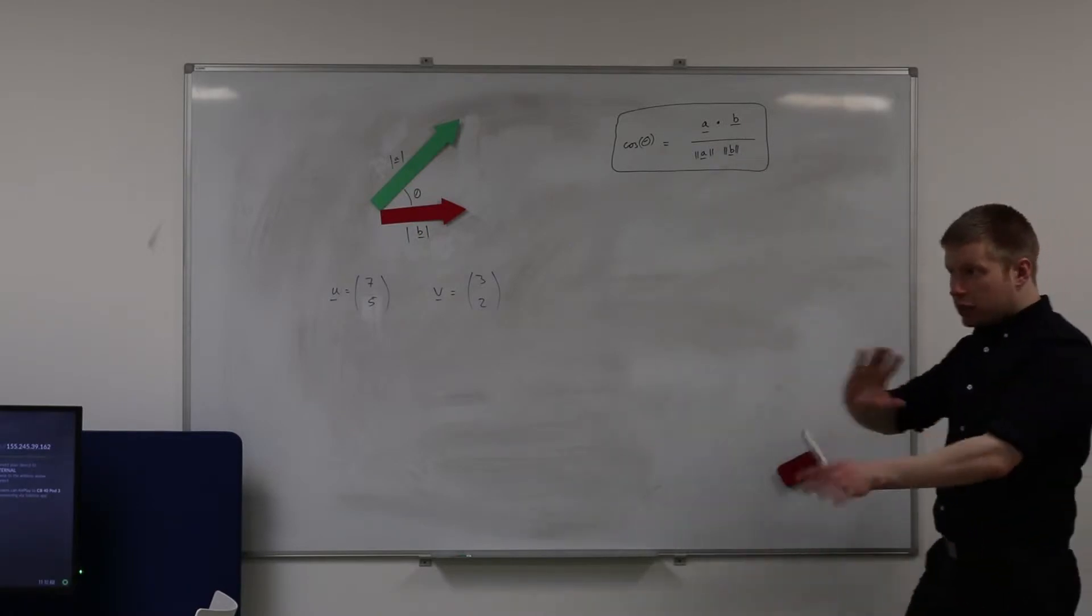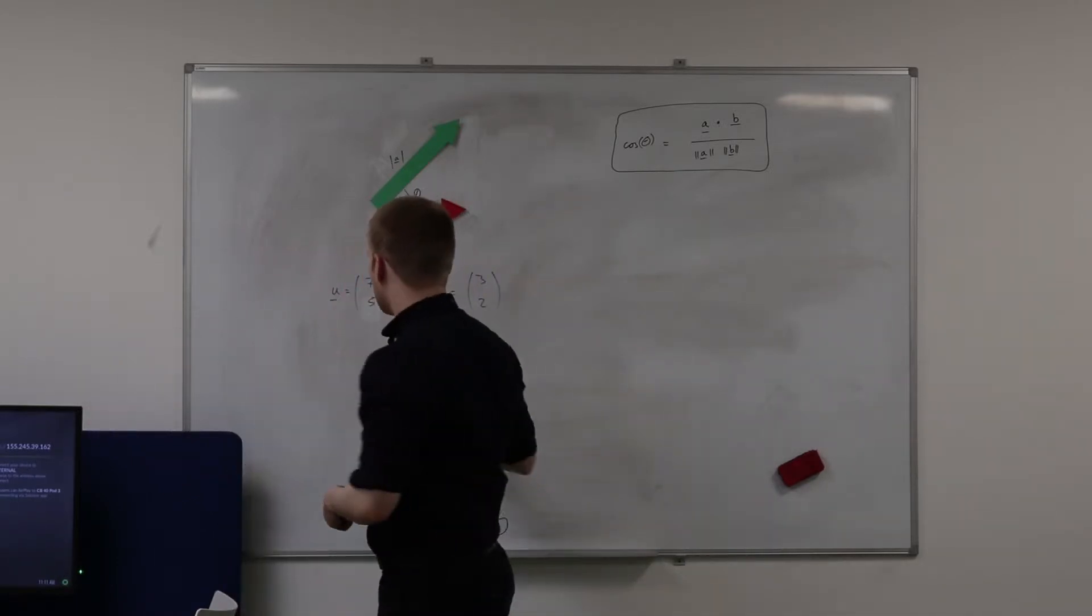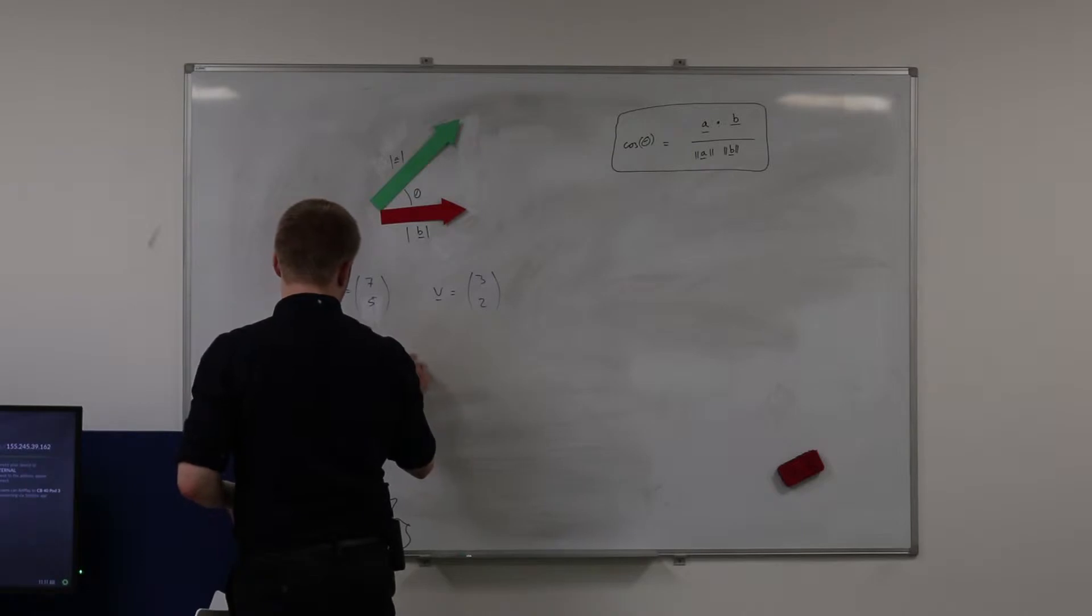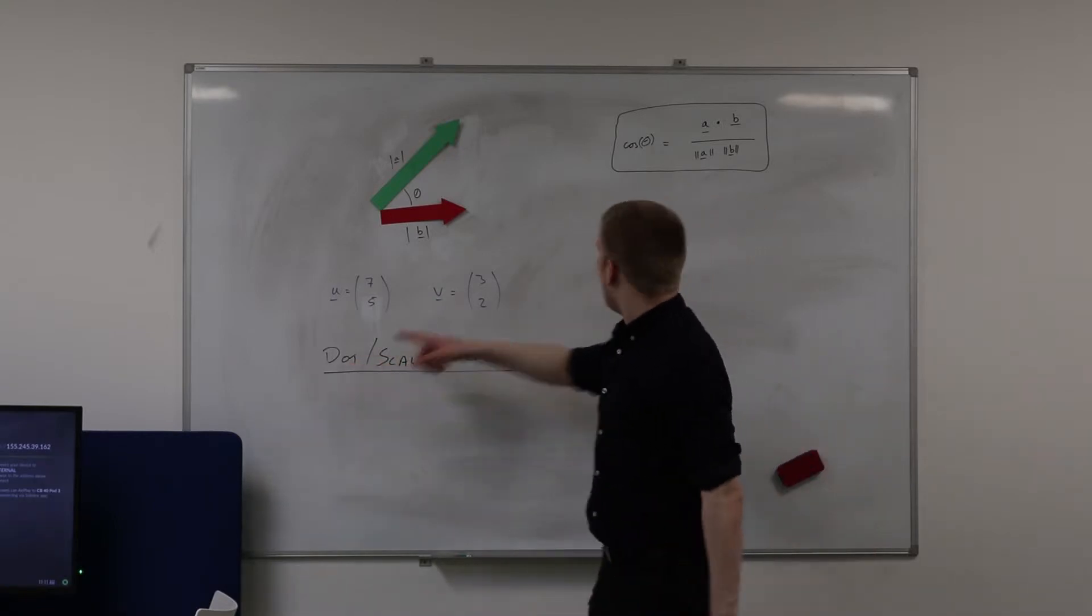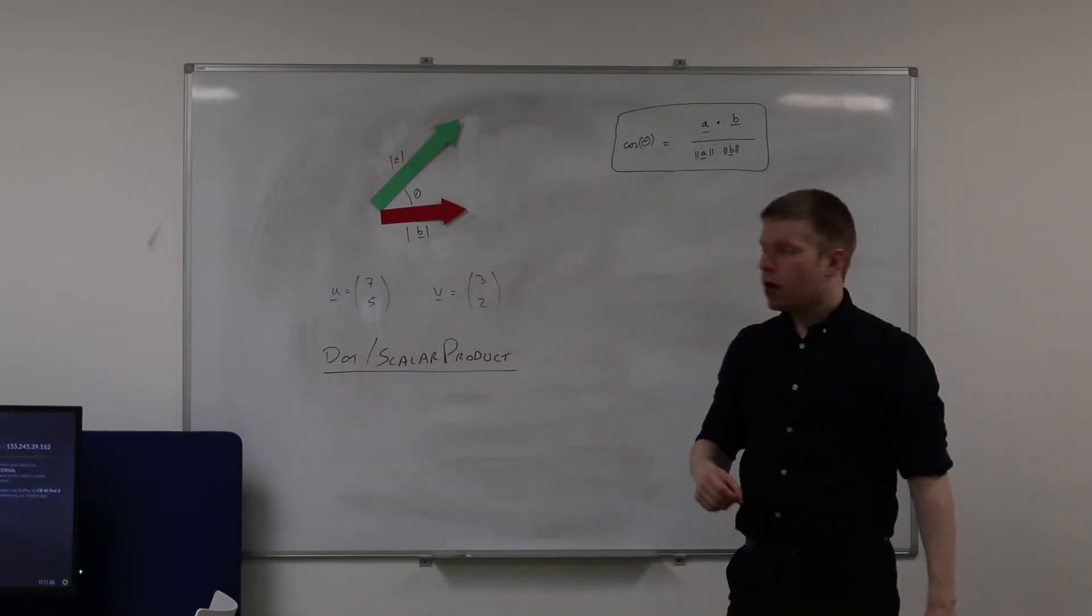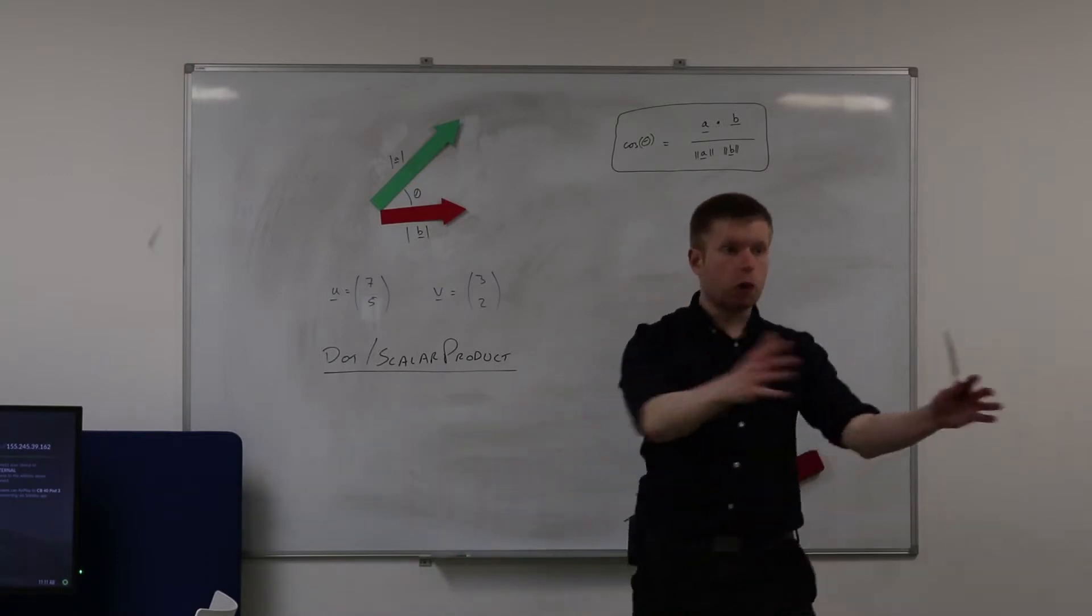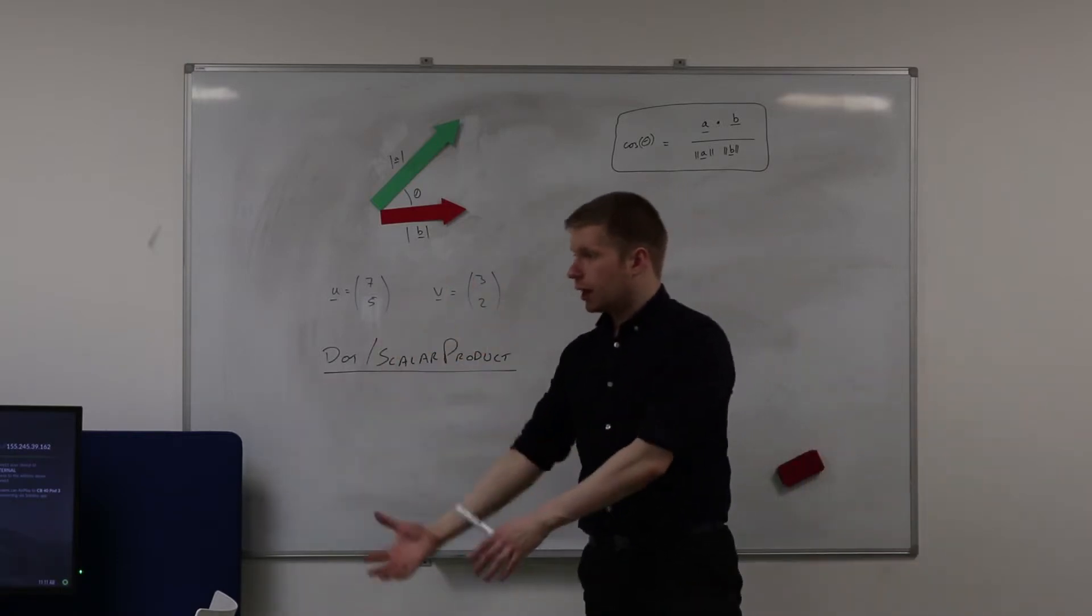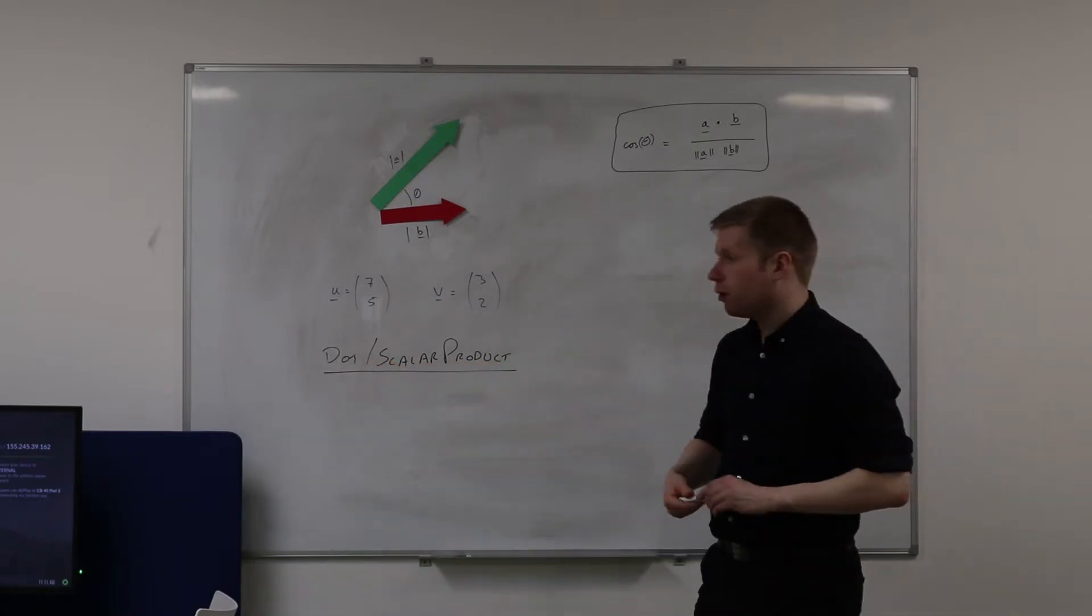Now I said there's two ways of multiplying vectors together. One of them is called the dot product or the scalar product. And the reason being is because we put a dot between those two vectors and the answer results in a scalar. So you can either call it the dot product or you can call it the scalar product. I'm giving you both so that you're aware of it in case you see it in books or something.